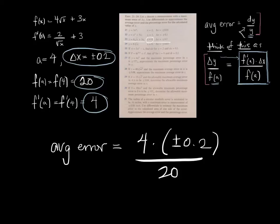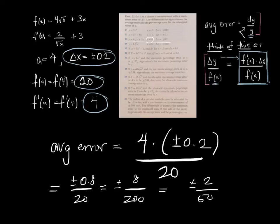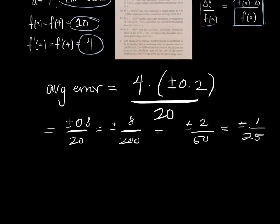And what do we get? We get that it is plus minus 0.8 over 20. Same as plus minus 8 over 200. Now I'm just going to divide by 4. If I divide by 4, I'll get plus minus 2 over 50. Divide by 2, plus minus 1 over 25. And that, of course, is our average error.